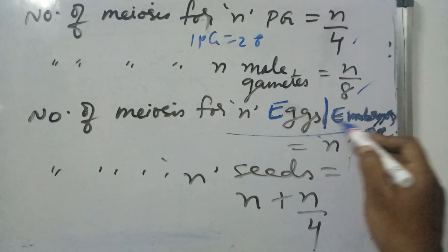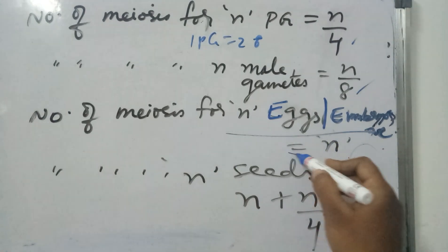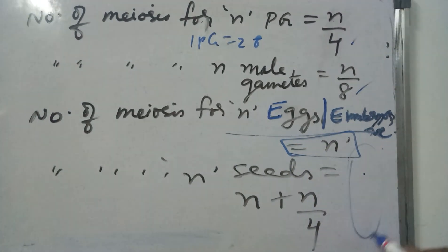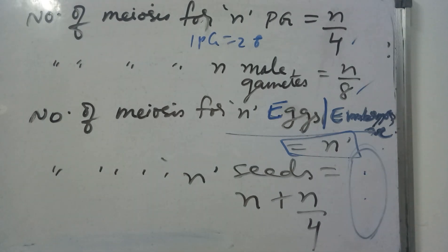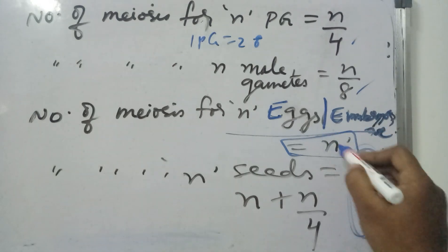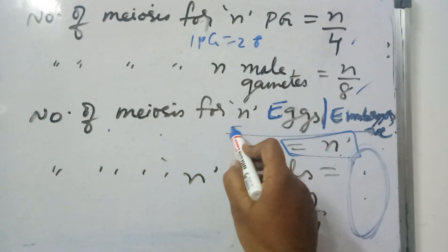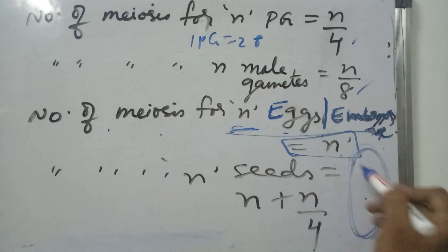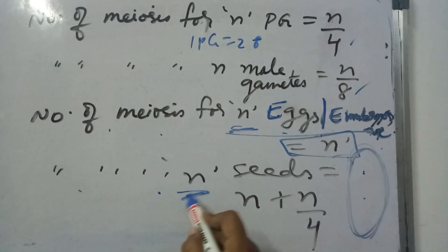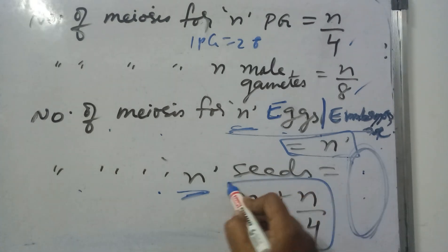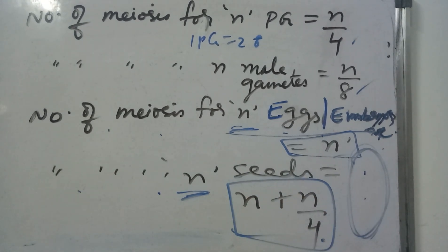Number of meiotic divisions for formation of N embryo sacs is equal to N, because one meiotic division results in one megaspore mother cell undergoing meiosis to form four megaspores, from which only one is functional. So only one embryo sac and one egg cell are formed. That's why number of meiosis required for formation of N embryo sacs is equal to N. Number of meiotic divisions for formation of N seeds is equal to N plus N by 4.